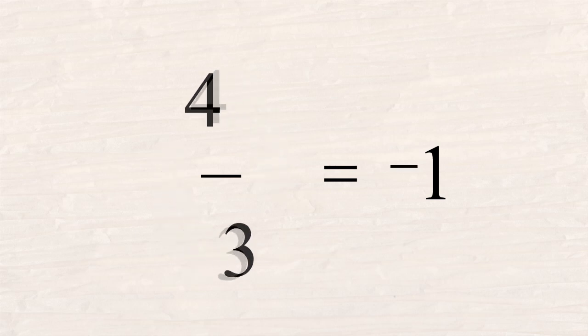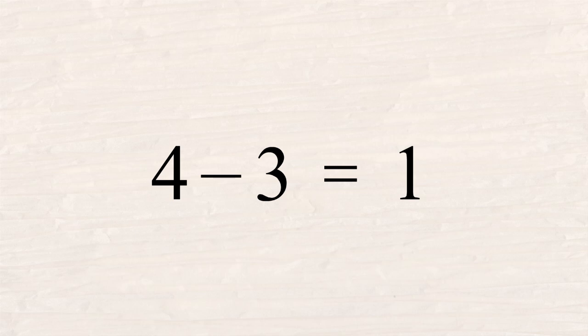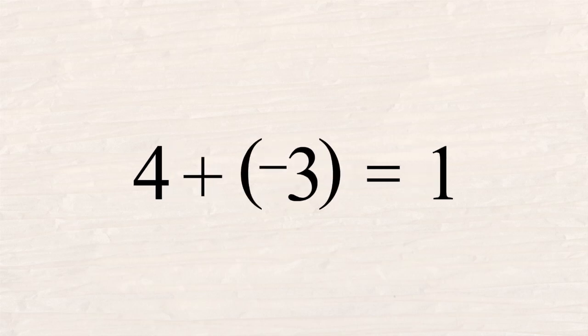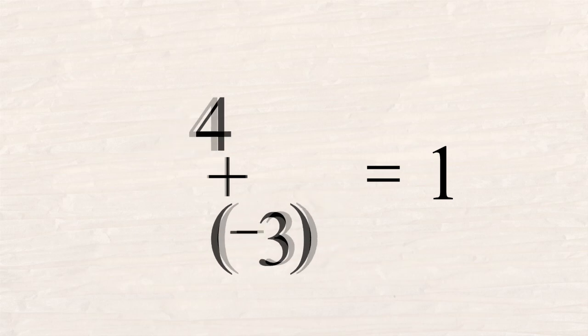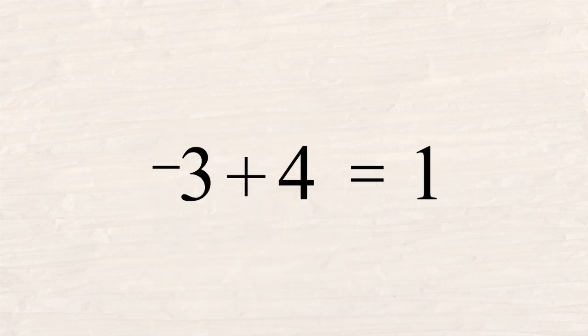As we saw in the previous lecture, we can write four minus three as an addition of positive four plus negative three. Now, since addition is commutative, we can switch the four and the negative three without changing the result. This is a trick which can come in handy in algebra problems.